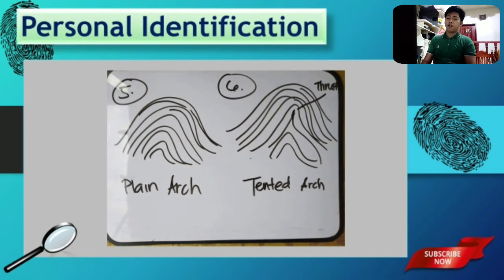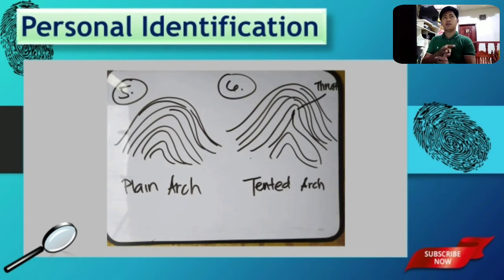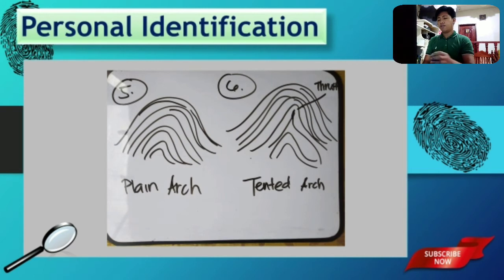So those are the subfamily divisions. For loops, we have two divisions: radial and ulnar. For whorl pattern, we have four divisions: central pocket loop, plain whorl, accidental, and double loop whorl. For arches, we have plain arch and tented arch. Next, we are going to talk about the rules in locating delta.